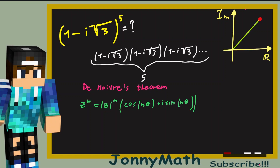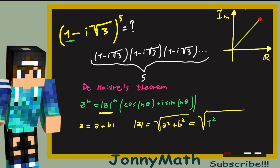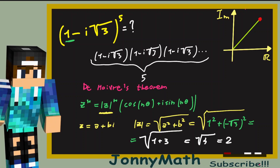This might sound weird at first, but it is actually very useful to solve our problem. First of all, we have to find the modulus of our complex number. The modulus of any complex number a + bi, by definition, is equal to the square root of a² + b². In our case, a is 1 and b is -√3, so the modulus is √(1² + (-√3)²) = √(1 + 3) = √4 = 2.